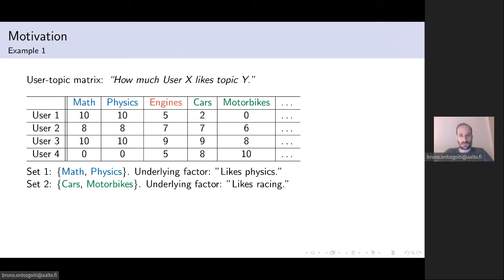Our goal is to find sets of variables which are explained approximately by a single factor. For example in this matrix, it's obvious that sets of variables such as math or physics are explained by the underlying factor like physics. Whereas the variables cars and motorbikes are likely explained by whether or not the user likes racing.